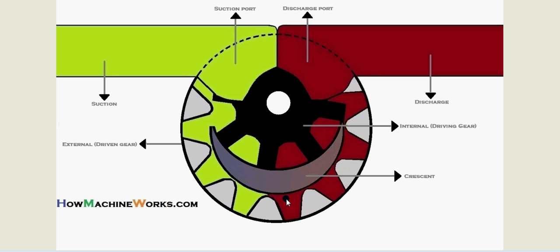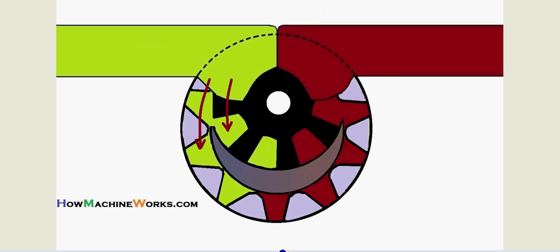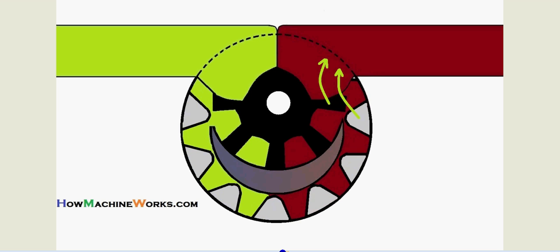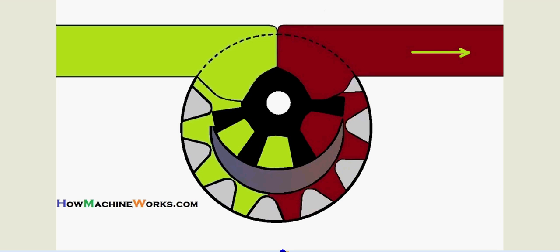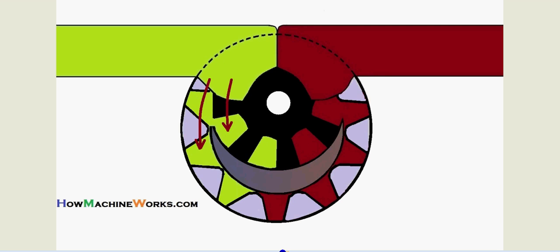that the suction and the discharge can be carried out. Okay, now let's see - that's how the oil comes in and it gets trapped between both the gears as it rotates between the crescent, and it's been taken away and pushed out at the discharge. So let's have another look, a closer look. That's how the gears rotate